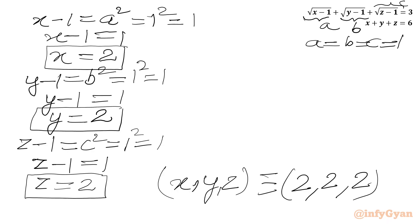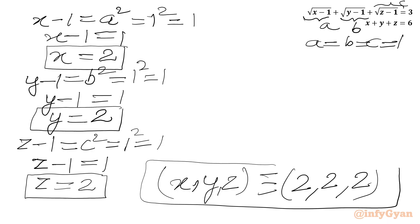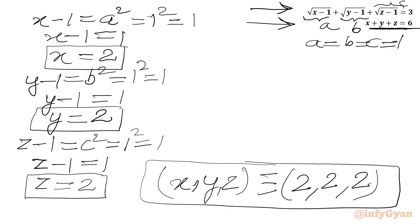We can check and verify our result. x plus y plus z equals 2 plus 2 plus 2 equals 6. From the first equation, square root of (2 minus 1) equals square root of 1 equals 1. Similarly, square root of (y minus 1) equals square root of 1 equals 1. So each square root is 1, and 1 plus 1 plus 1 equals 3, which confirms our answer.